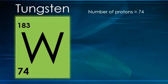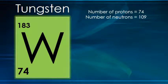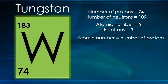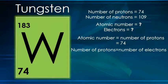Further, in a tungsten atom, the number of protons are 74 and the number of neutrons are 109. The atomic number is equal to the number of protons, which is 74. Since the number of protons equals the number of electrons, there are also 74 electrons in tungsten.